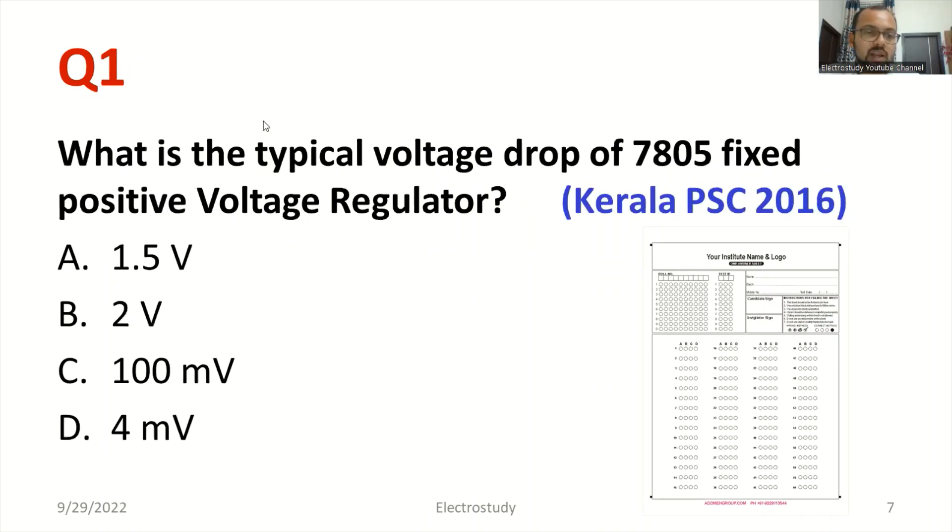First question: What is the typical voltage drop of 7805 fixed positive voltage regulator? Can you identify the answer? Yes, we have four options. The right answer is option B. You can go for 2 volt. It's the right answer.